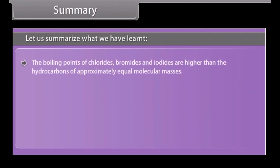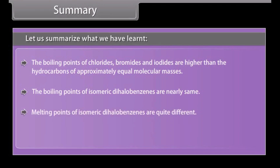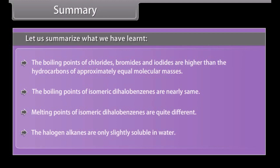The boiling points of chlorides, bromides, and iodides are higher than those of hydrocarbons of approximately equal molecular masses. The boiling points of isomeric dihalobenzenes are nearly the same. The melting points of isomeric dihalobenzenes are quite different. Haloalkanes are only slightly soluble in water.